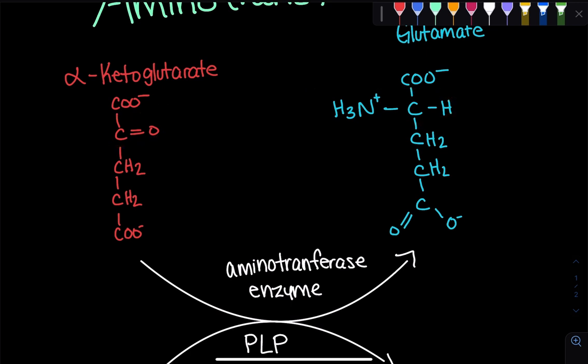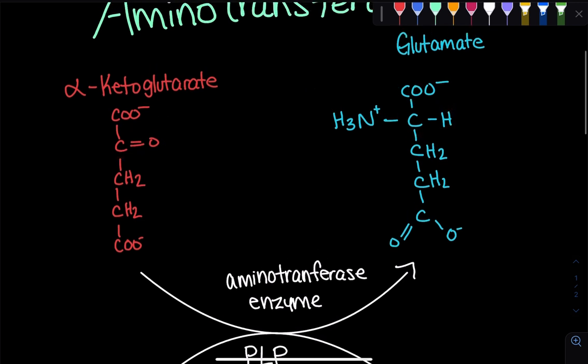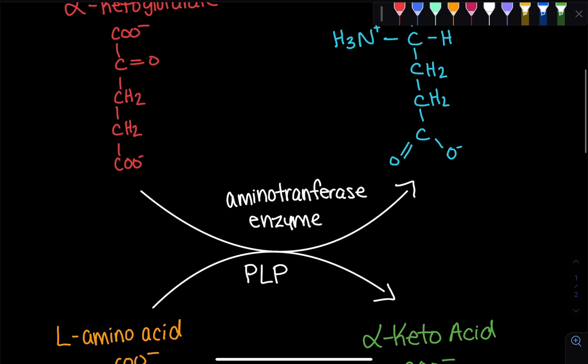That's one way we can remember that. This reaction where you're transferring an amino group is called an aminotransferase enzyme. Remember, it's a class of enzyme that transfers amino groups. And it always has this cofactor called PLP.